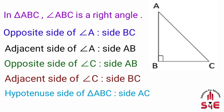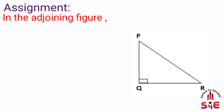Angle A ka opposite side BC hai. Angle C ki adjacent side BC hai, aur angle C ka opposite side AB hai. Angle BC is 90 degrees, aur hypotenuse side AC hai. Assignment: in the adjoining figure, first write the names of sides forming the right angle; second, hypotenuse; third, opposite side of angle P; fourth, opposite side of angle R; fifth, adjacent side of angle P; sixth, adjacent side of angle R.